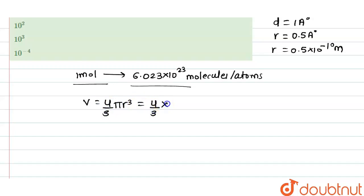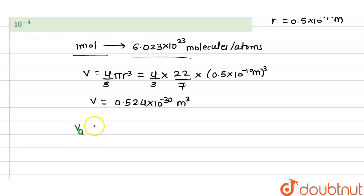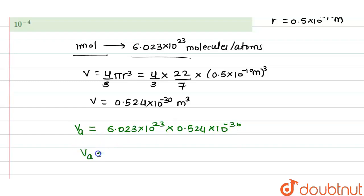Substituting all the values: 4 by 3 into pi (22 by 7) into radius 0.5 into 10 to the power minus 10 meter. The volume for a single hydrogen atom equals 0.524 into 10 to the power minus 30 meter cube. For one mole of hydrogen, the atomic volume will be 6.023 into 10 to the power 23 multiplied by 0.524 into 10 to the power minus 30, giving 3.16 into 10 to the power minus 7 meter cube.